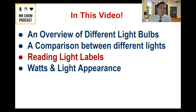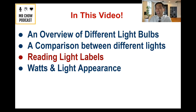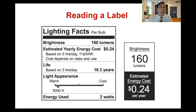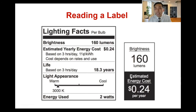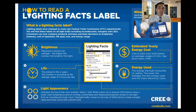When you look at any light bulb container, there's actually something called a light label — kind of like a nutritional label. It can tell you everything from brightness to yearly energy cost depending on rates and use, life expectancy, light appearance, energy used, lumens, and estimated energy costs.